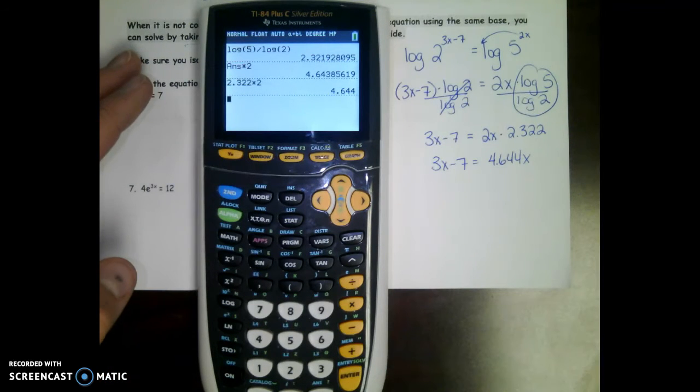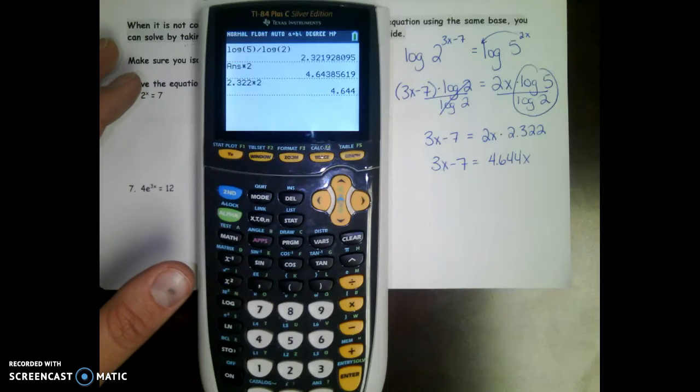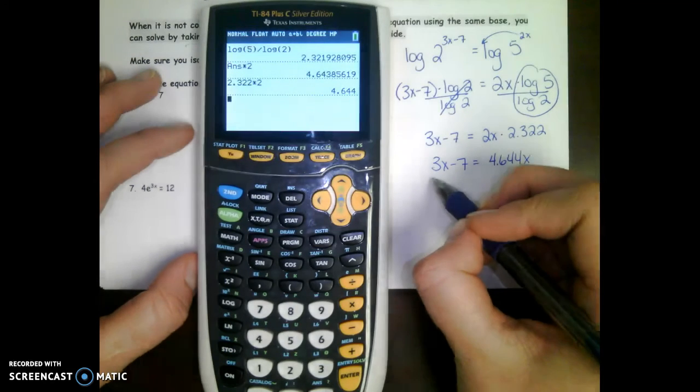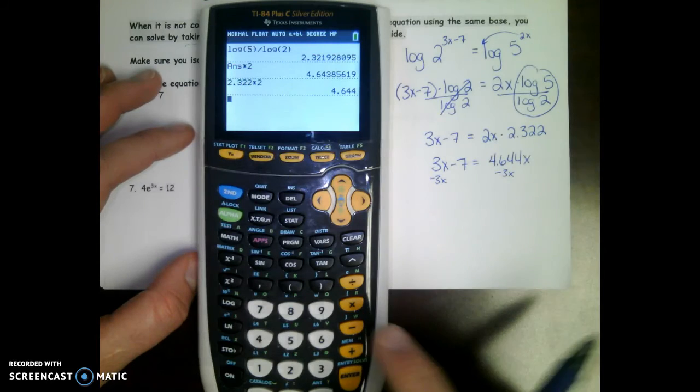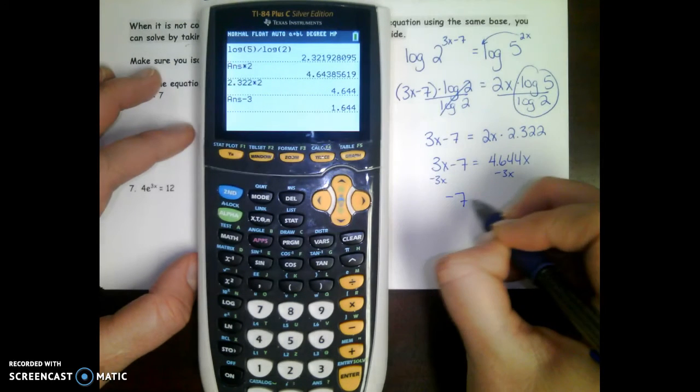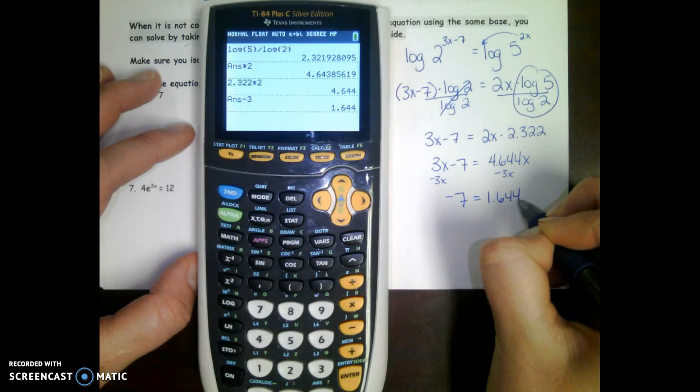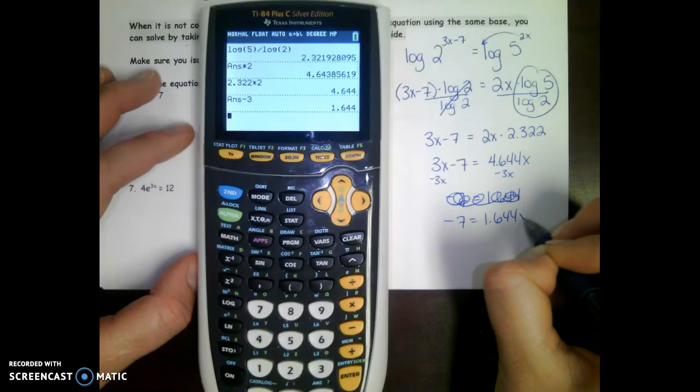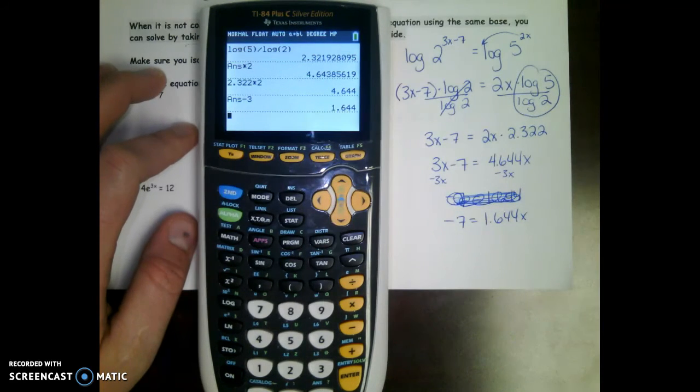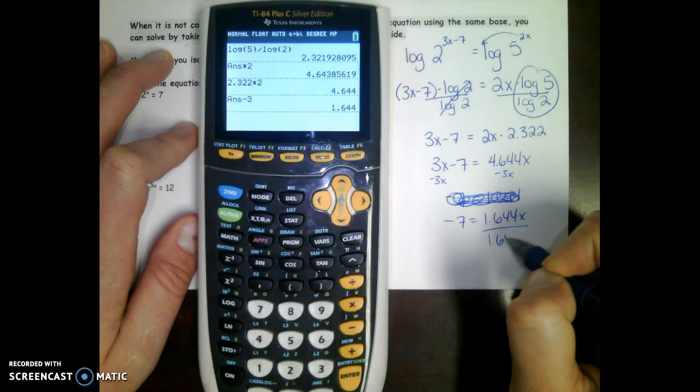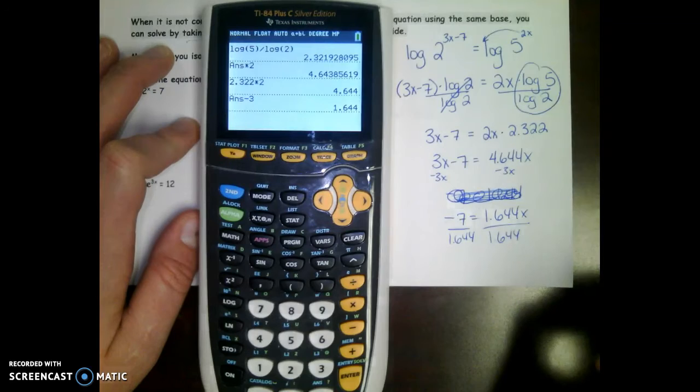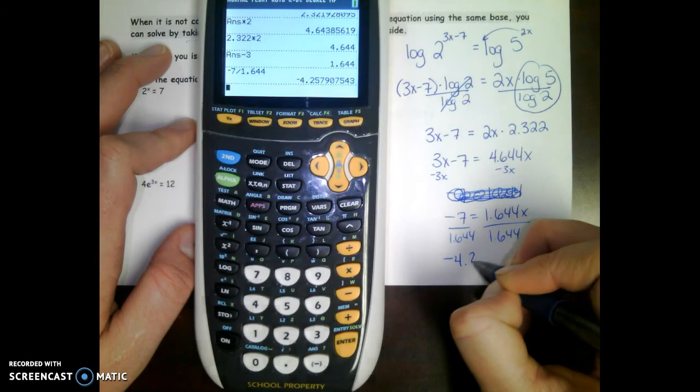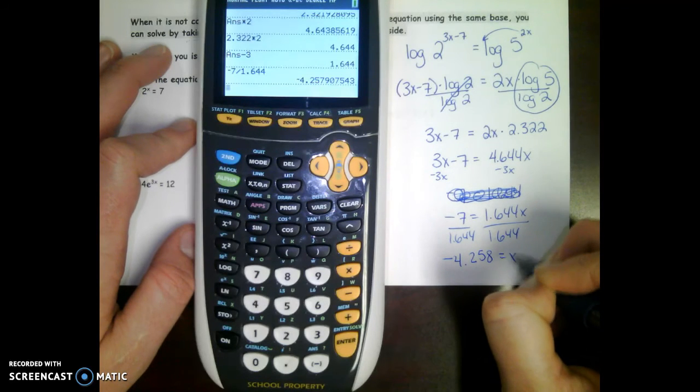Now this doesn't look pretty because you don't like decimals, but is it possible to solve this equation even though there's decimals? We would subtract 3x on both sides. So 4.644 minus 3. Even I get confused with decimals sometimes, it's okay. And then we divide by 1.644. Negative 4.258 equals x.